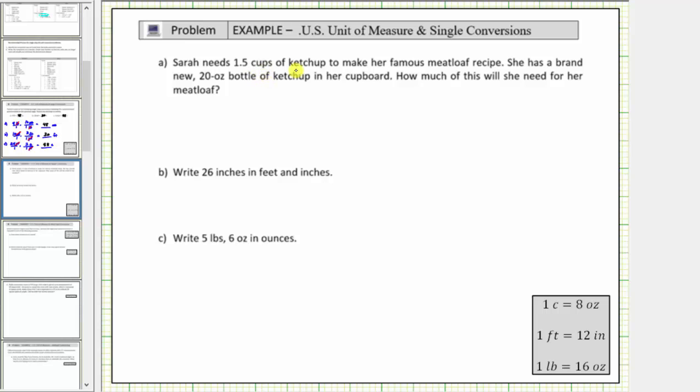Sarah needs 1.5 cups of ketchup to make her famous meatloaf recipe. She has a brand new twenty ounce bottle of ketchup in her cupboard. How much of this will she need for her meatloaf? To answer this question, we will convert 1.5 cups to ounces by multiplying by a unit fraction.